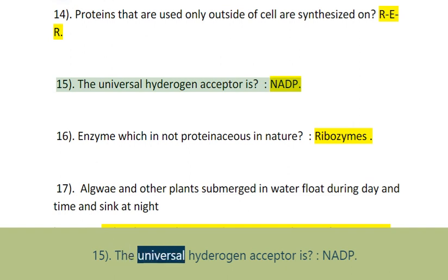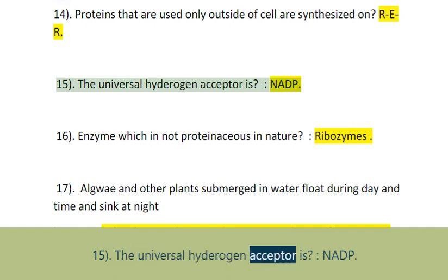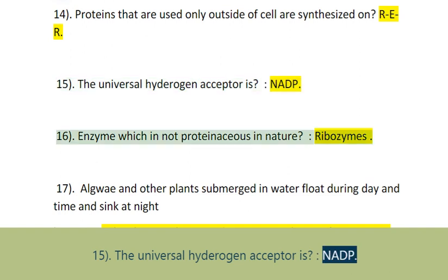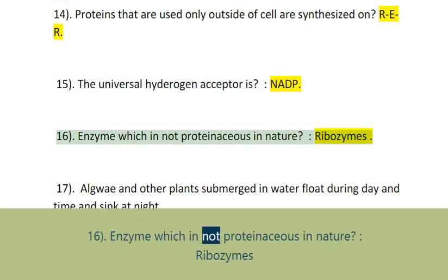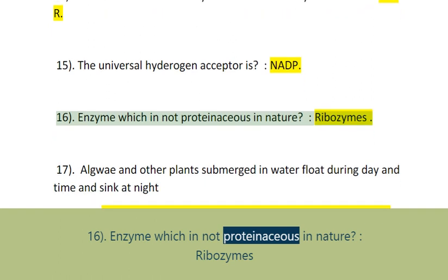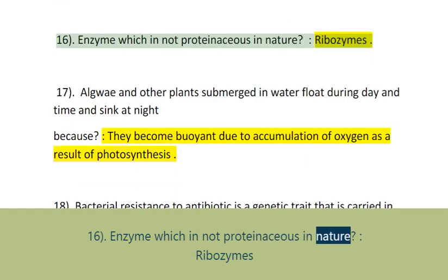Question 15: The universal hydrogen acceptor is NADP. Question 16: Enzymes which are not proteinaceous in nature are called Ribozymes.